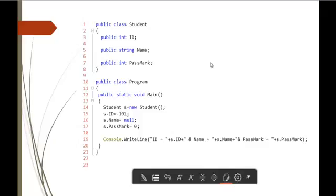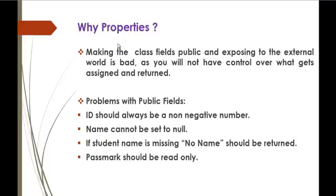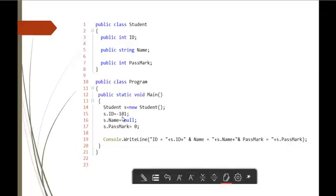Here you can observe public class Student. I am having a class called Student and I am having three fields in it — namely ID, name, and pass mark. You can observe all three fields are public in nature. Now we will jump into the previous slide and learn what is the disadvantage of making the fields public. Exposing class fields to the external world is bad because we will not know what gets assigned to them. The problem is ID should always be a non-negative number, but here I have set ID to a negative number — this should not happen.